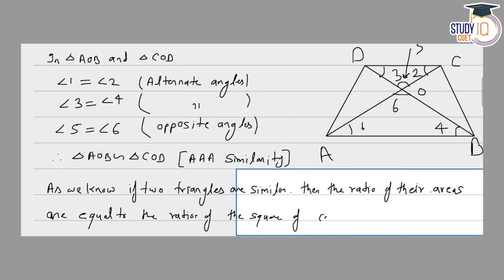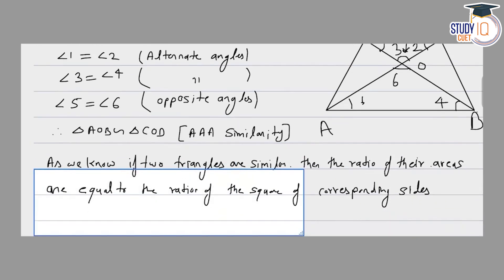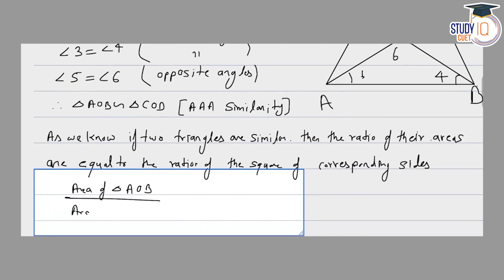Here, area of triangle AOB divided by area of triangle COD. This is one side of the relation.